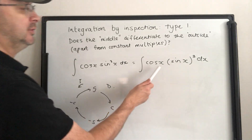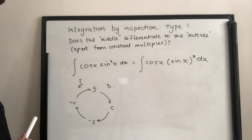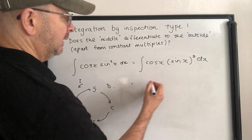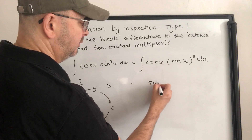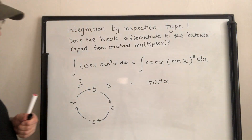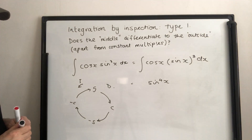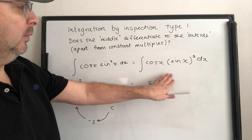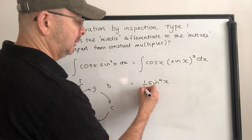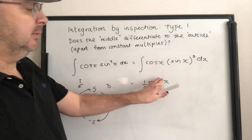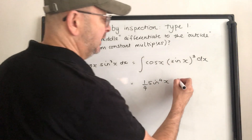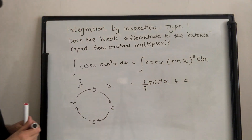What does sin differentiate to? Cos — that's fine. So what sort of thing would integrate to sin cubed x times cos x? Well, sin to the power of 4 of x. Differentiating that back, the 4 comes down the front and we don't want it there, leaving sin cubed of x times cos x — the derivative of sin x. So the answer is one quarter sin to the power of 4 of x, plus c.